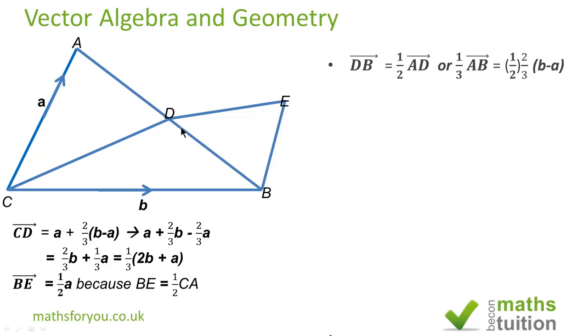DB or Vector DB can either be a half of AD because we know that AD is 2 thirds of AB and then DB will be a third of AB. So Vector DB can either be a half of AD or 1 third of Vector AB. If we go down the half Vector AD route, we have that half times 2 over 3 into (b minus a). The 2 is cancelled out so Vector DB then becomes 1 third into (b minus a).